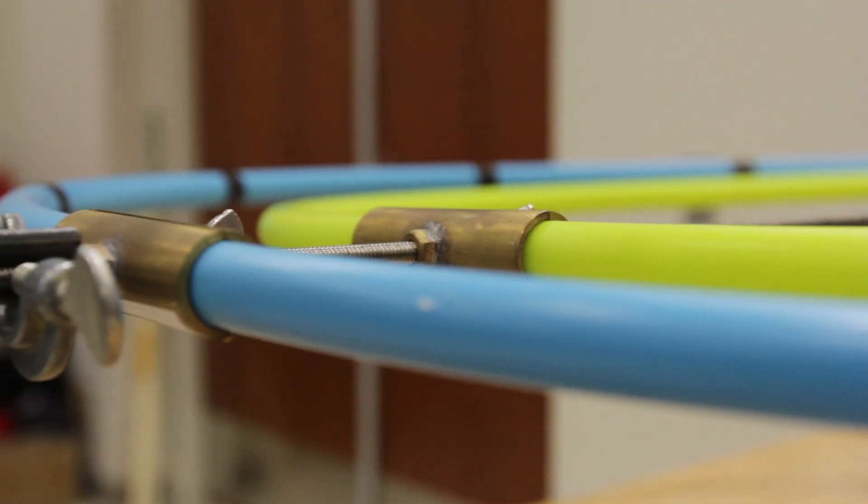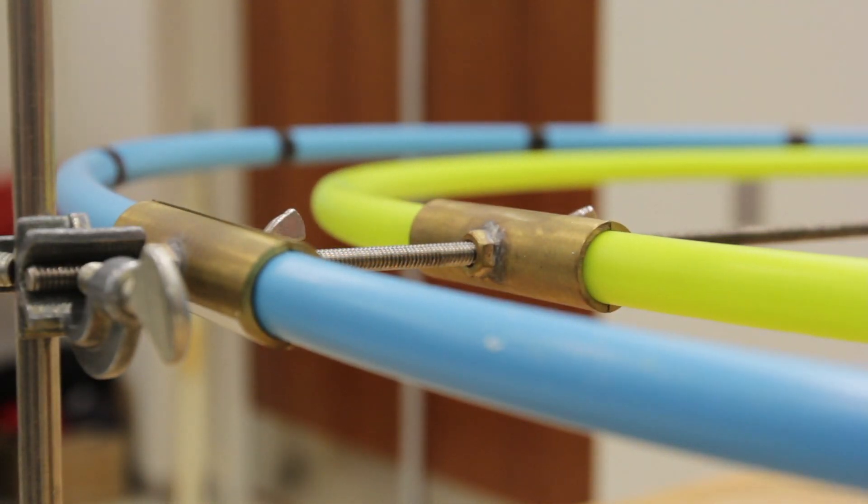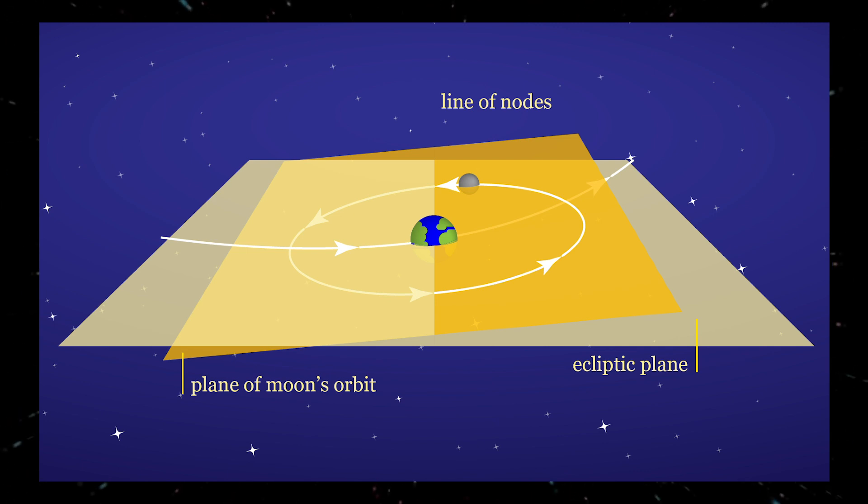The threaded rod represents the line of nodes, the intersection of the plane of Earth's orbit around the Sun and the plane of the Moon's orbit around Earth. Eclipses can only occur when both the Sun and the Moon are very near the line of nodes.